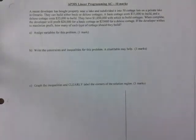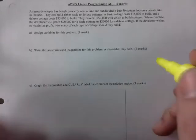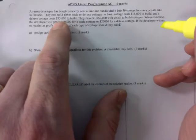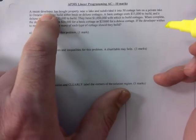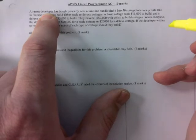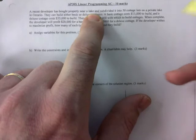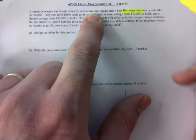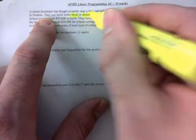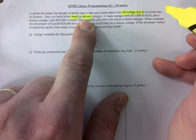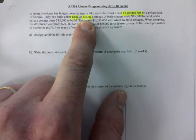This one is a tricky one, okay? So I see a lot of you highlighting right. A developer, like a big company that builds houses near a lake, wants to make 50 cottage lots and they can either build basic or deluxe. So those are your two variables there.